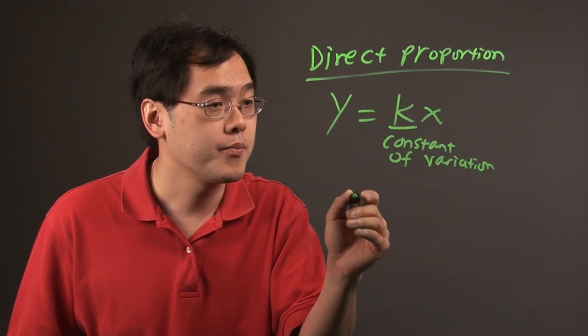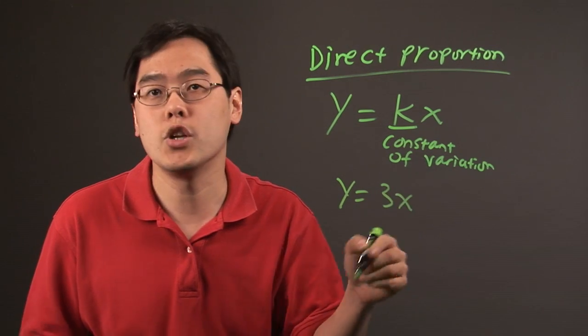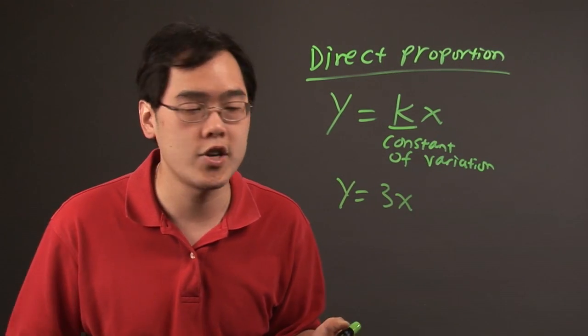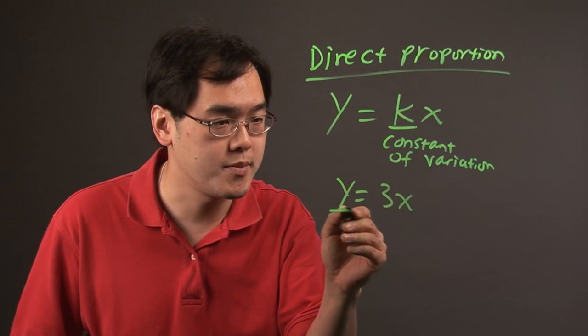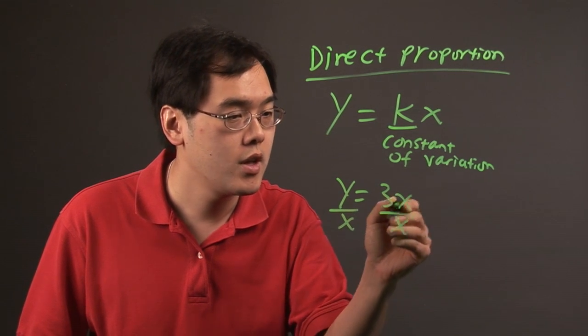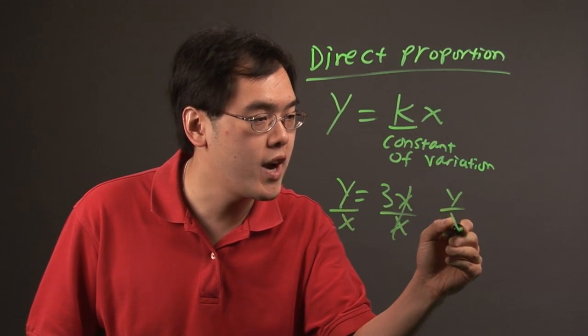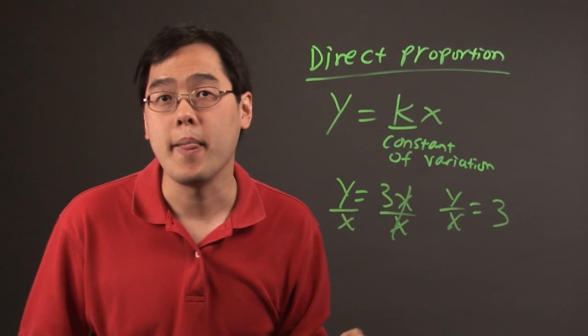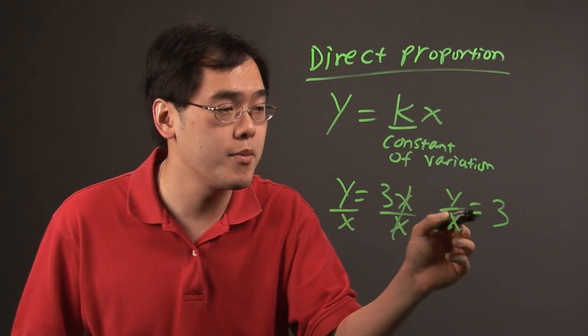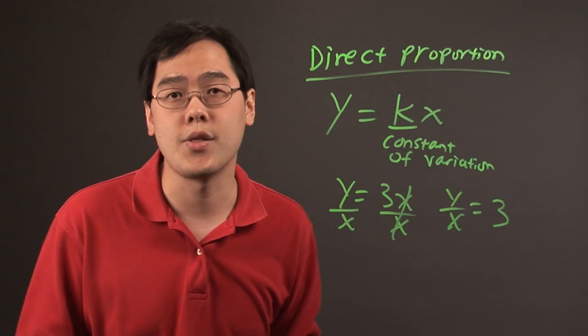If you have y equals 3x for example—I'm going to use a specific number for k just for illustration purposes—if you divide both sides by x, you get y over x equals 3. That means the ratio of the two variables equals the constant 3.